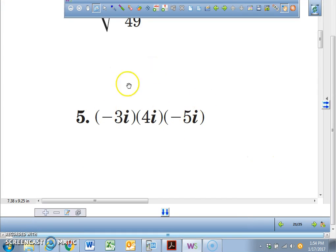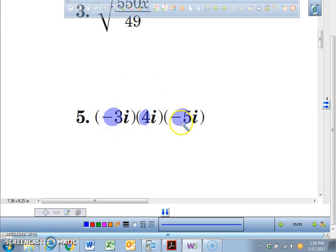Number 5. Alright, now we're going to find the final simplified product of this right here. What I'd like you guys to do when we start this is focus on your coefficients in front of the i, which are a negative 3, a 4, and a negative 5. Focus on those first. A negative times a negative is positive. 3 times 4 times 5 ends up getting us to a 60. i times i times i gets you to i cubed.